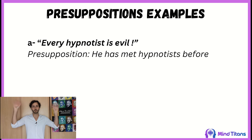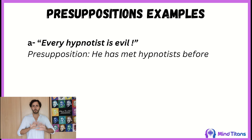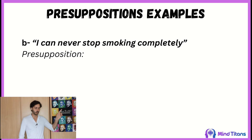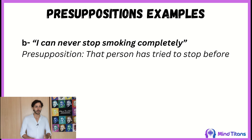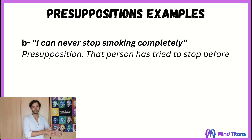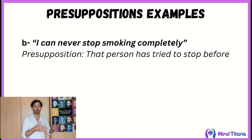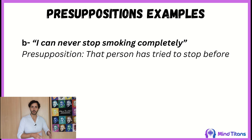Stay grounded in reality. What is evidence based on the person you are talking to? What are their presuppositions revealing? Another example: 'I can never stop smoking completely.' That person obviously wants to stop smoking. I want to challenge the presupposition that they have tried to stop before. I want to figure out what happened when they tried, and how they know those attempts are valid evidence that they will never be able to stop.